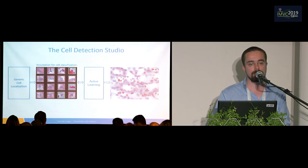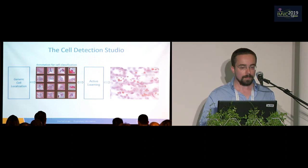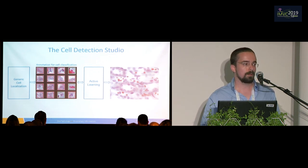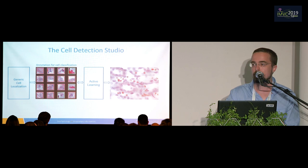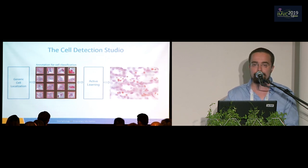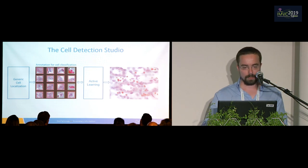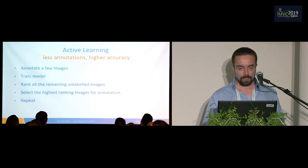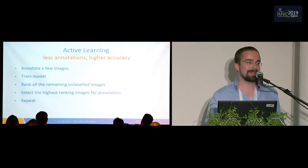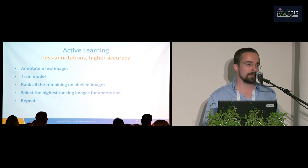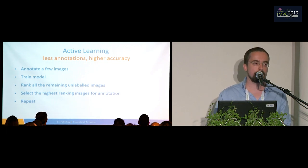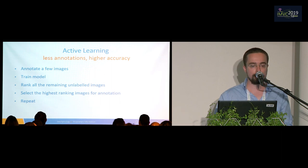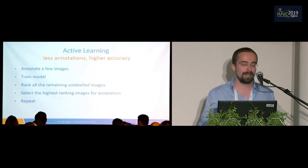We're also doing something else. During the annotation itself, there's a model training in the background, and that opens up a few possibilities. One possibility is that we can use active learning. So instead of just annotating random images, which is what you would usually do, we're going to select the images that we think the pathologist should annotate. The promise of active learning is to achieve higher accuracy with less data annotation. The most common scenario is called the pool-based scenario, where we have a large pool of unlabeled data to select from. The flow is: annotate a few images, train a model on these images, and then use the model and an active learning algorithm to rank all the remaining unlabeled images.